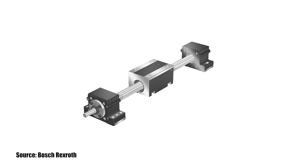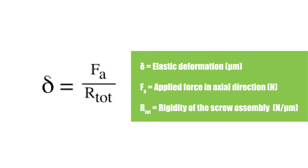Rigidity is an important factor in sizing a ball screw assembly because it determines how much elastic deformation the ball screw will experience in the axial direction under a given force. Elastic deformation is important because it affects the ball screw's positioning accuracy.